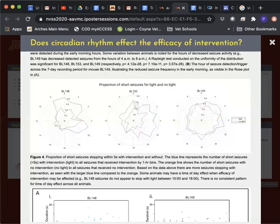Next, I looked at the proportion of short seizures stopping within five seconds with and without intervention. I found that more seizures stopped with intervention, noted by a larger blue line compared to the orange line. Some animals may have had a time-of-day effect on intervention efficacy, seen in animal 148, where the two groups did not appear different from one another because the blue and orange lines were very similar. But there was no consistent pattern for time-of-day effect across all three animals.